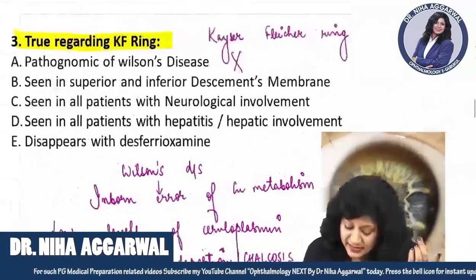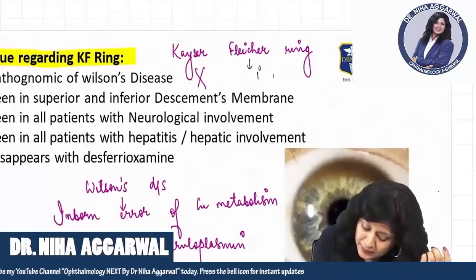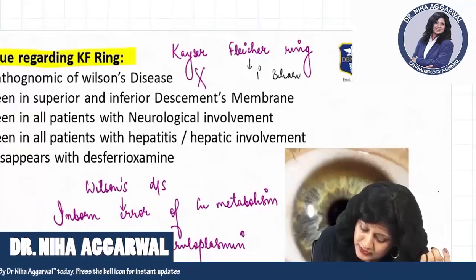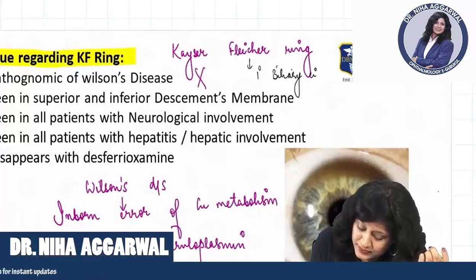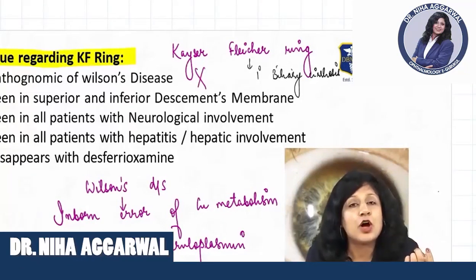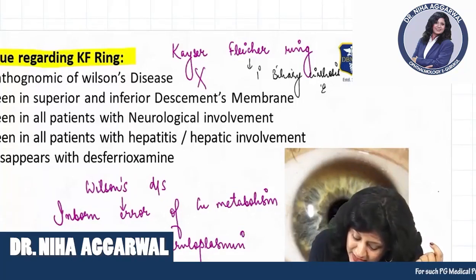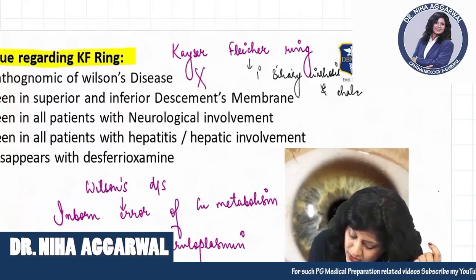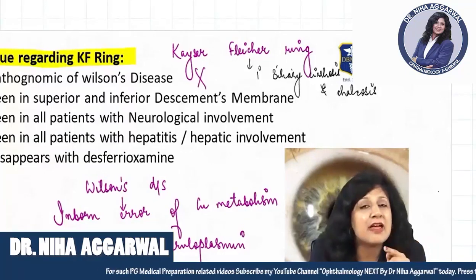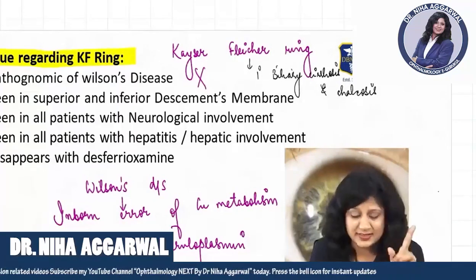It is not exclusively found in Wilson's disease, because you can get the KF ring in primary biliary cirrhosis as well — your Robbins tells you this. We have got the KF ring in primary biliary cirrhosis as well as chalcosis. Therefore, I cannot say that the KF ring is entirely pathognomonic of Wilson's disease.